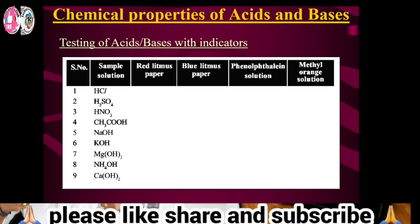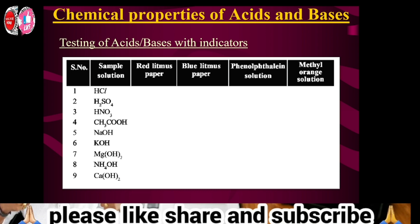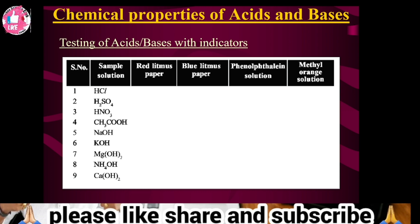Indicators — we have already discussed these in previous classes. Litmus papers are general indicators. Blue litmus paper turns red in acids. Red litmus paper turns blue in bases. These are the two indicators.